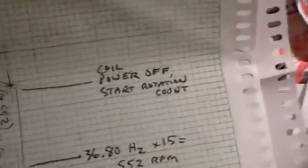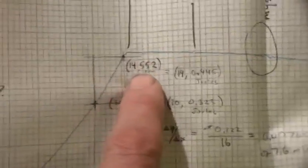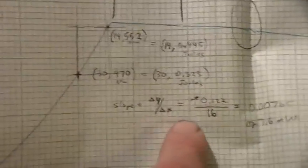Mystery Spot. Mystery Spot always occurs at the same RPM. I think it's an artifact of the encoding software. Coil power off, start rotation count. And then we did the slope — 7.6 milliwatts.